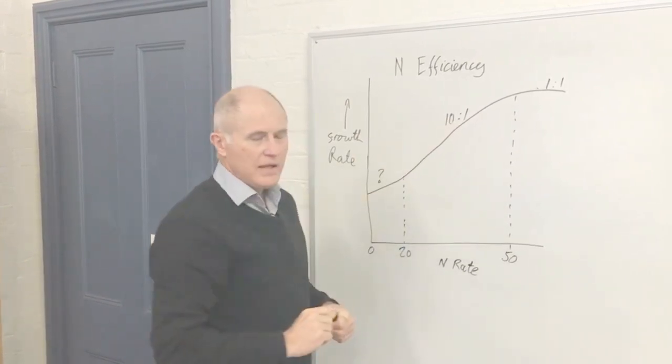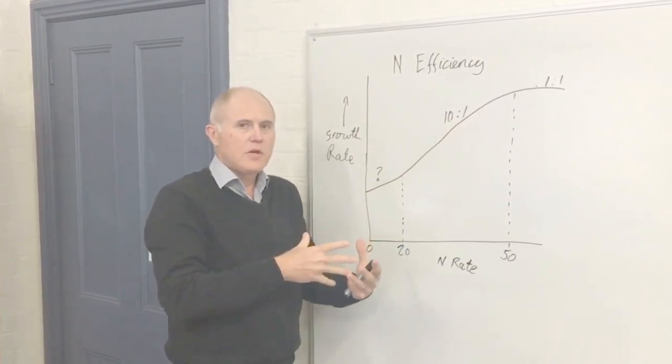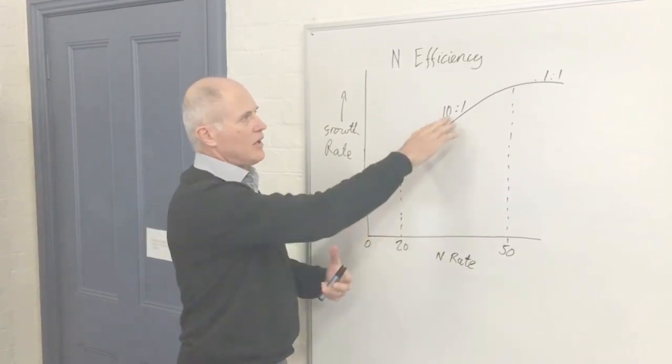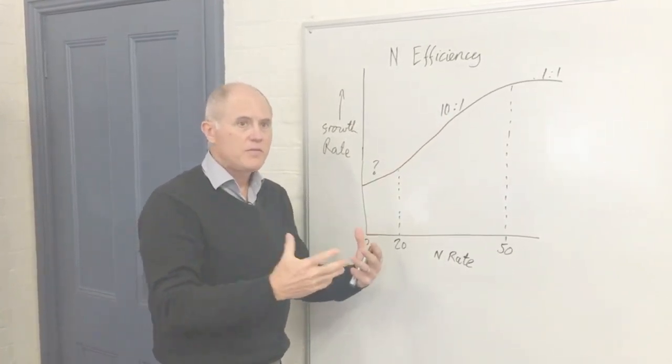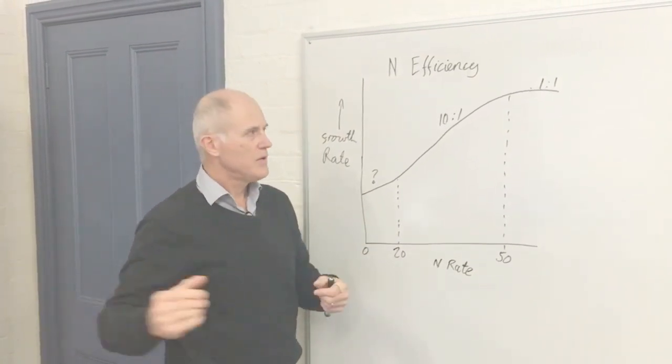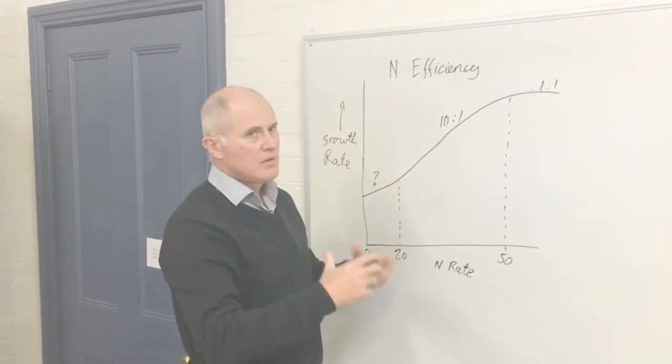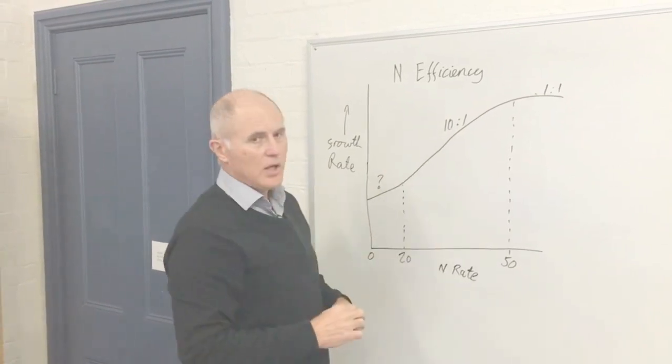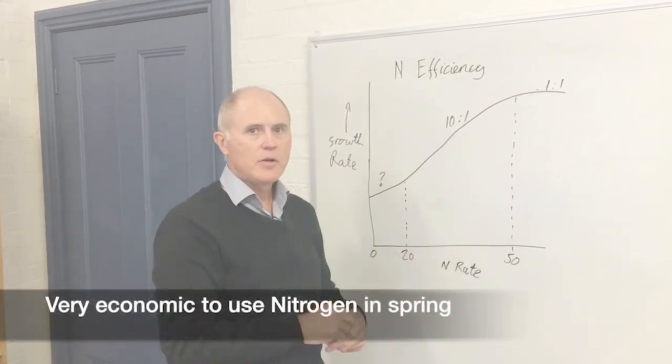As I said, that can vary. For example, during a dry February it can be well below 5 to 1, in which case it's far cheaper—unless you've got irrigation—to go somewhere else and buy your feed. During the spring period, commonly it's well over 10 to 1, being very economic to use nitrogen.